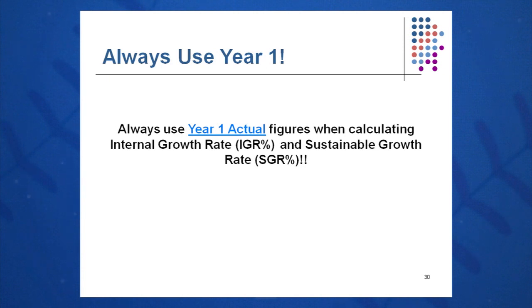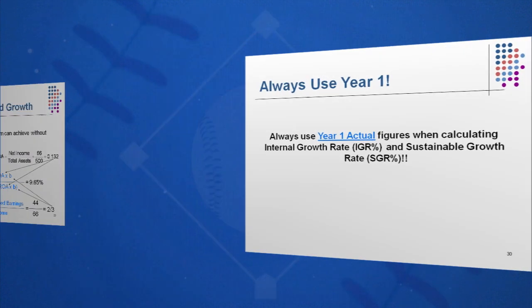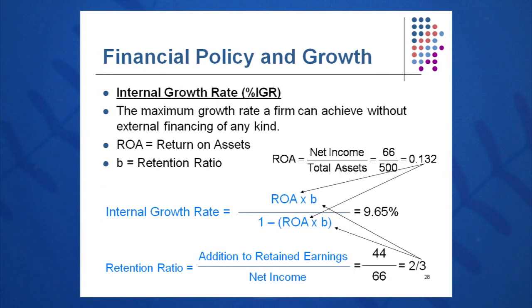A good example — this might apply in your home life. Your parents may have a farm or a small business back in your hometown. If they have an income statement and a balance sheet, you can calculate for them how fast they can grow next year without any financing of any sort. That might be something to impress them with at the dinner table. So I need an income statement and a balance sheet to calculate this internal growth rate.